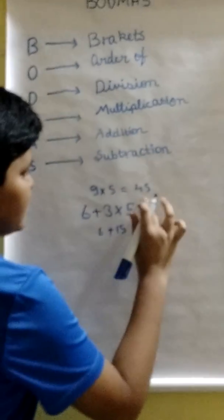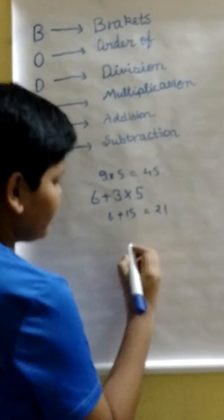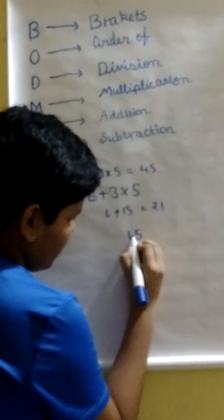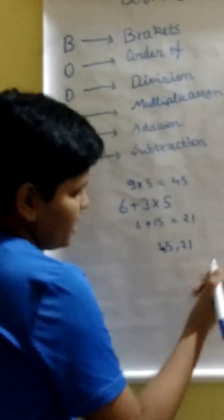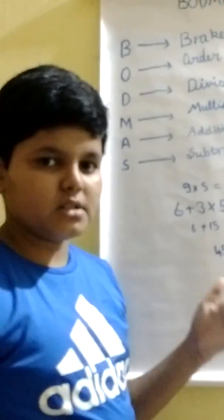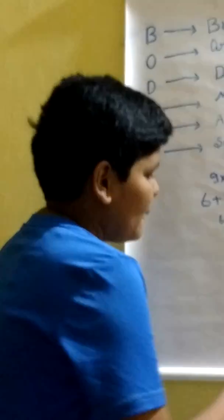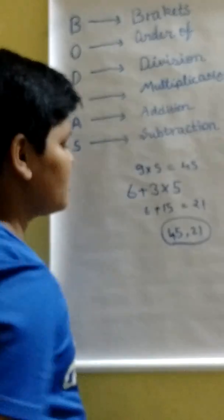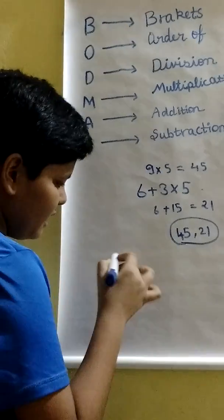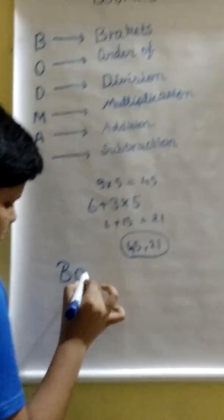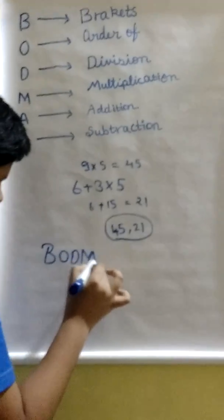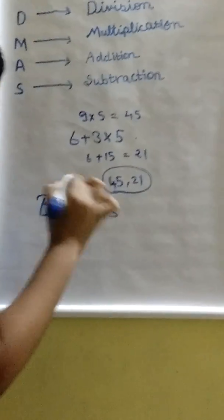Out of the answers 45 and 21, how can we say which answer is the correct one? To solve these types of problems, we have our rule named BODMAS rule.